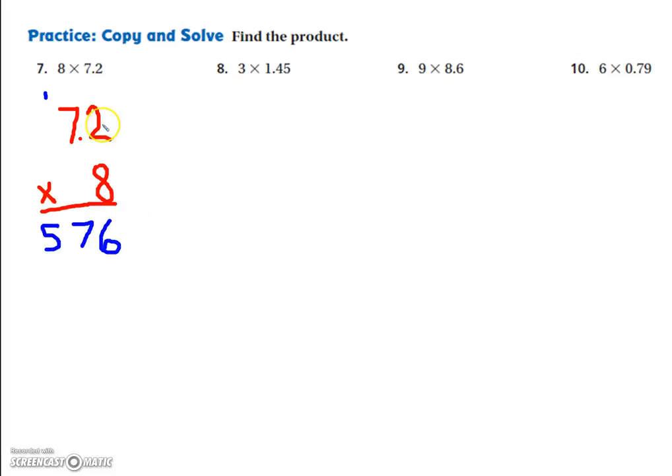Now we have to figure out where the decimal goes. What you do is you circle the numbers that are after the decimal point in your problem and you count them. Here there's only one. So I put my pencil at the end of the number, and I count that many places to the left. One. My answer is 57.6.